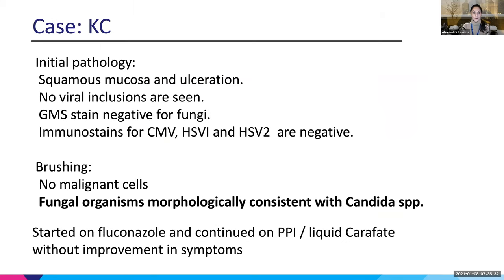We took a bunch of biopsies that actually came back not so interesting. There was squamous mucosa with ulceration but no viral inclusions, fungus stain on the biopsies was negative, and immunostains were negative for all common culprits. I took brushings and there were no malignant cells, but there were fungal organisms. We started her on fluconazole, but we weren't convinced — we continued her on PPI and liquid Carafate, but she really didn't improve and continued to have weight loss.